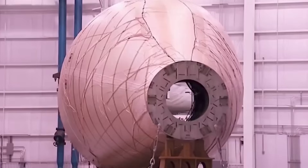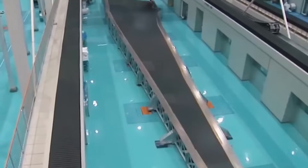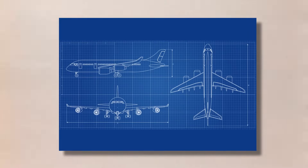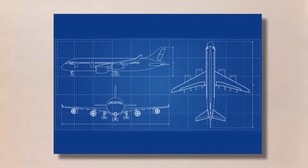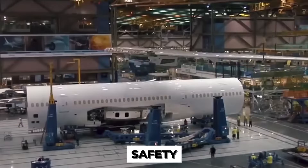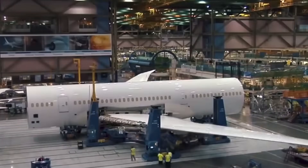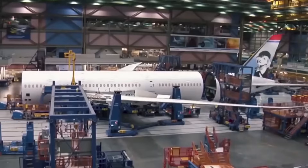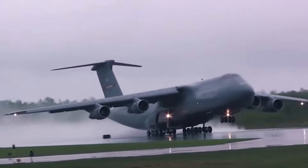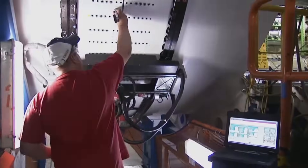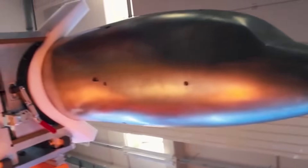The design and concept phase of airplane manufacturing is where the process begins. Engineers and designers work together to create a blueprint for the airplane, taking into consideration factors such as aerodynamics, weight distribution, and safety. This phase is crucial, as any mistakes or oversights at this stage could have serious consequences later on in the manufacturing process. One of the most important aspects of airplane design is aerodynamics. Engineers use computer simulations and wind tunnels to test and refine the design, ensuring that the airplane will be able to fly efficiently and safely.